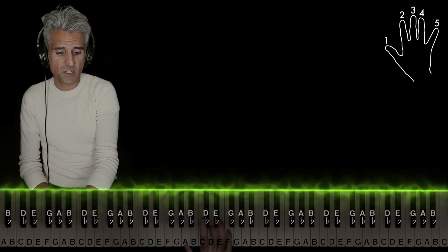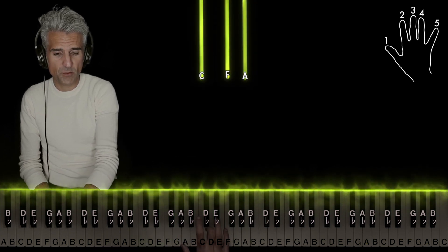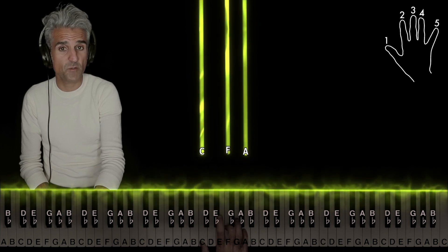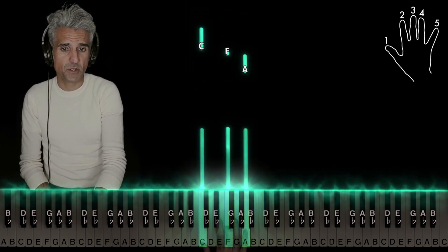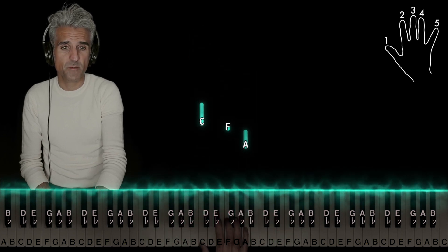The next chord is the same shape, meaning leave your right hand formed like this and move it up. This is an F major chord second inversion. Use the same fingers and play it from top to bottom.